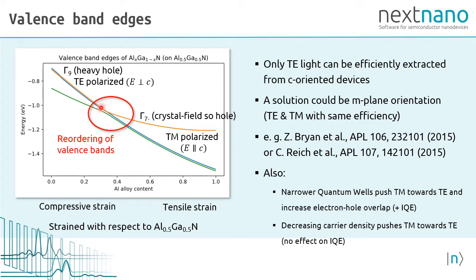If we had a device in this regime where we have both TE and TM-polarization, we could use an M-plane-oriented substrate to extract both types of photons. It also has been shown that narrower quantum wells push TM-polarization towards TE and decreasing carrier density helps to some degree.